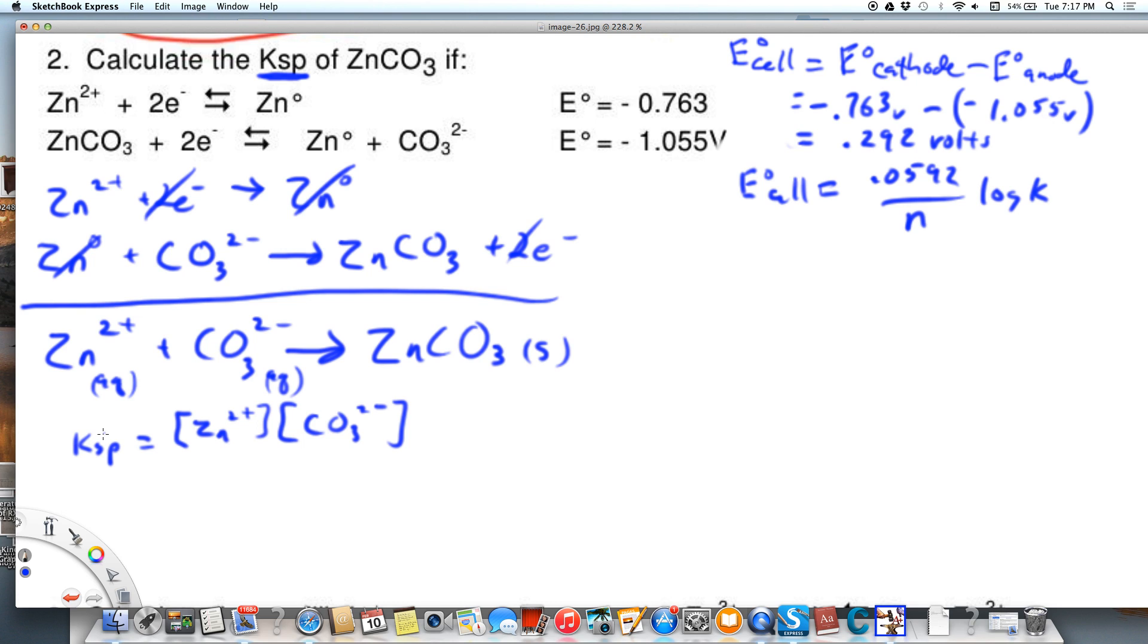So let's plug our numbers in here. E0 cell. We know that then log of K is going to equal E0 for our cell over 0.0592 over 2 because we have two electrons here. So that's going to equal 0.292 over 0.0296 and that's going to equal 9.86. That's not our K value. That's our log of K. So we take the inverse log and K turns out to be 7.33 times 10 to the ninth.